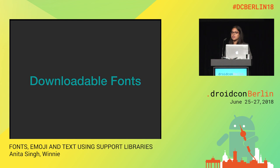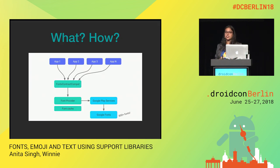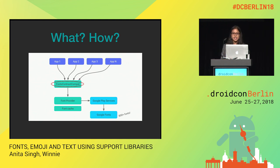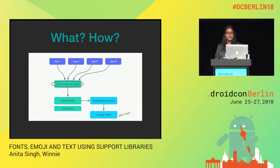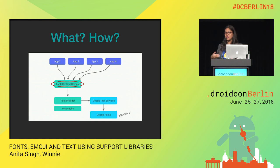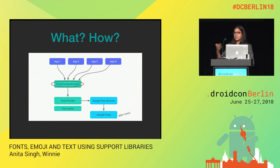This next topic — downloadable fonts — also helps make implementing custom fonts really easy. Downloadable fonts essentially helps apps share fonts with each other. Different apps can request fonts from a central font provider application using the FontsContractCompat API. The font provider looks into the cache to see if the font is there; if not, it downloads it from the internet, caches it, and now different apps can use it. The currently publicly available font provider is the Google font provider, which lives in Google Play services and gives you access to around 800-plus Google fonts.